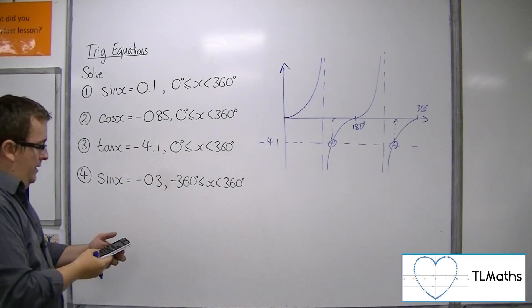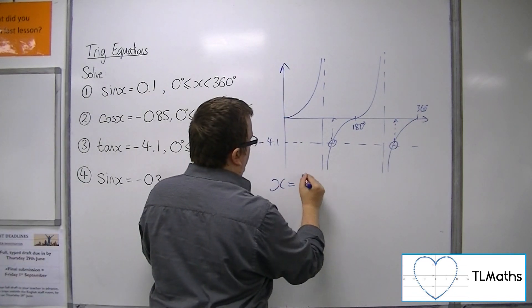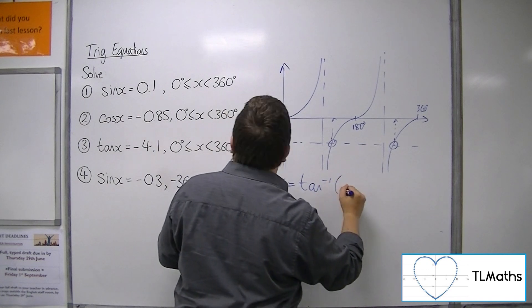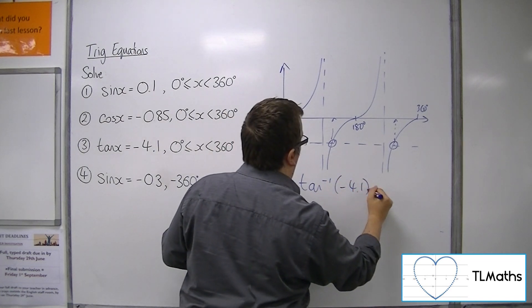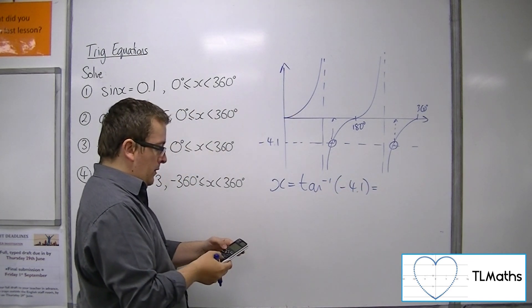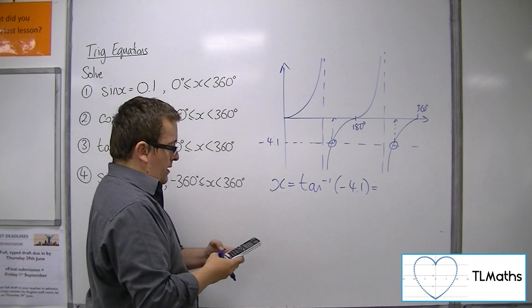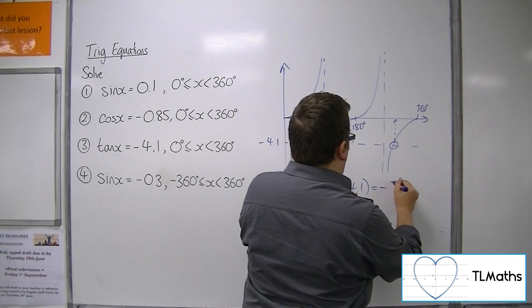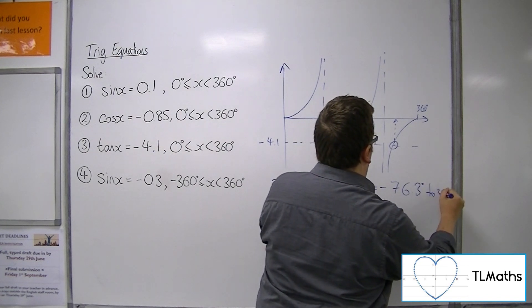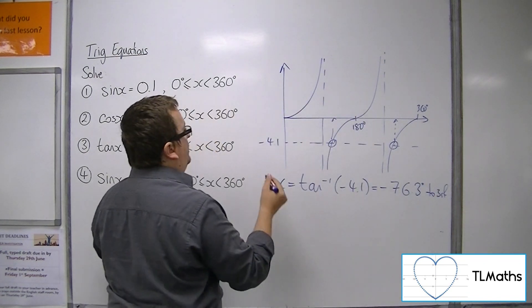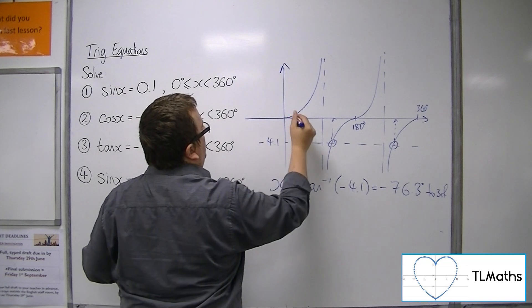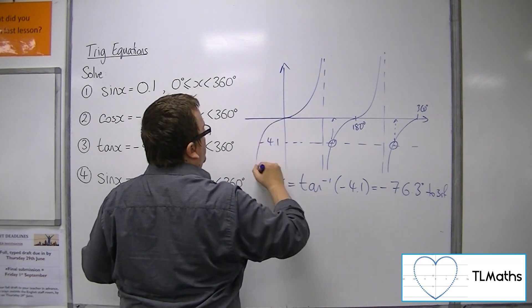Now if you do inverse tan of minus 4.1, you get minus 76.3 degrees to 3 significant figures. Now what's happening is this.